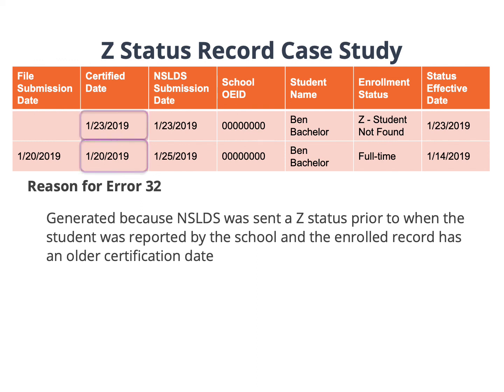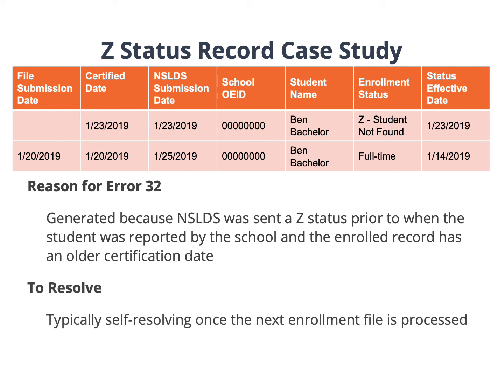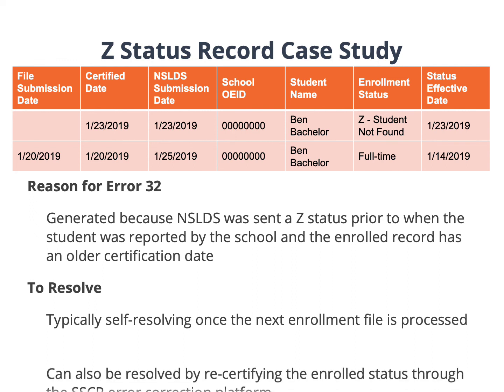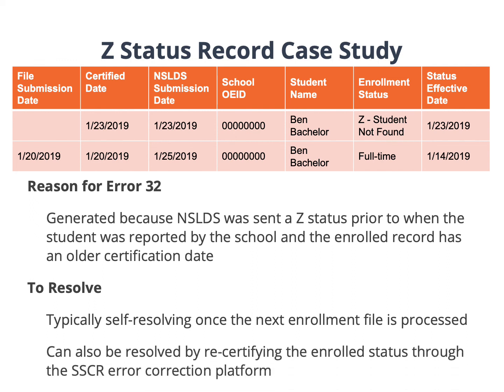Errors for this scenario are typically self-resolving once the next enrollment file is received and processed. They can also be resolved, like many of the other Error 32 scenarios, by recertifying the record through the SSCR error correction platform. However, typically the Error 32s in this scenario come in large amounts, so manual updates may not be possible.